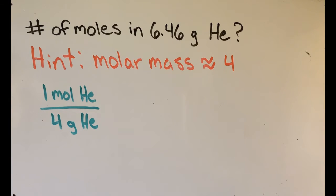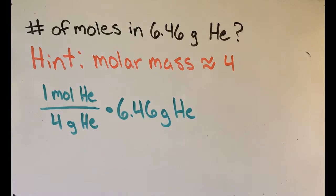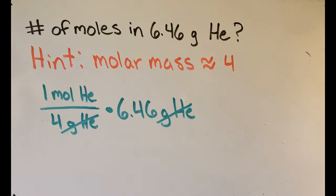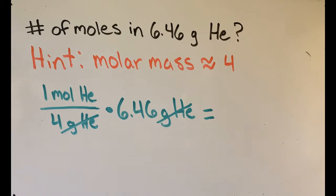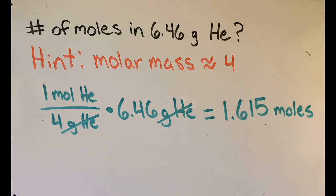Now we just multiply 1 mole per 4 grams by the amount we have, 6.46 grams, to figure out how many moles there are. The grams unit will cancel out and we get 1.615 moles of helium in 6.46 grams.